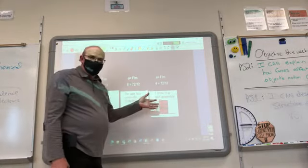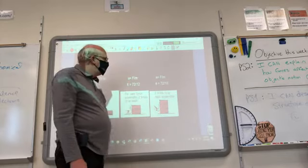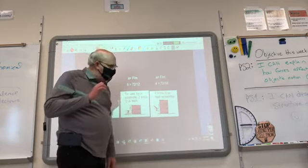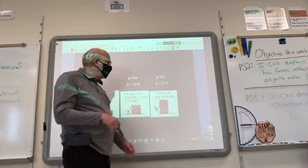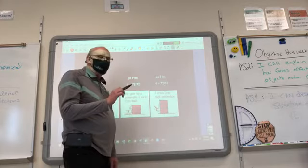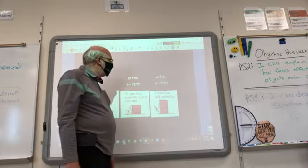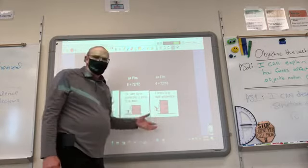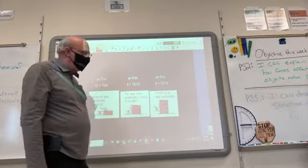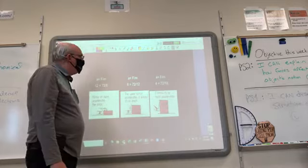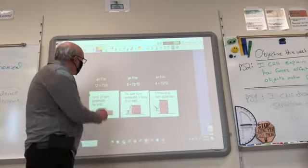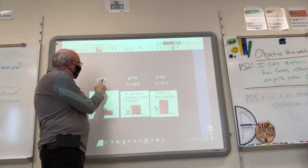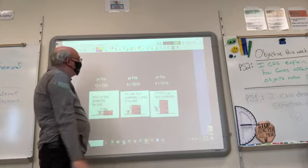Following the same logic, if you have three bricks with a mass of 18 kilograms, 72 Newtons divided by 18 gives even less acceleration. So that's an example of Newton's second law applied mathematically — to figure out the acceleration on an object, you take the net force divided by the object's mass.